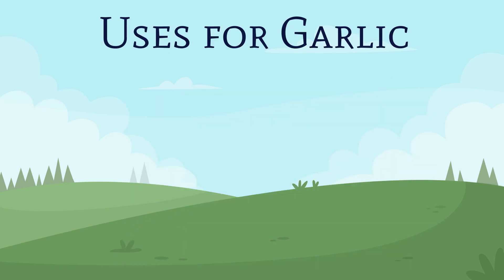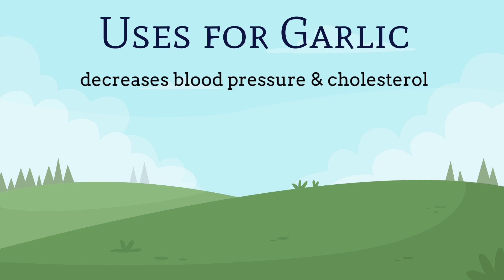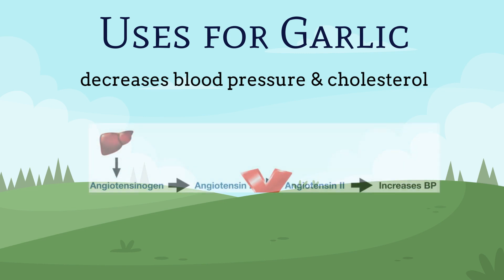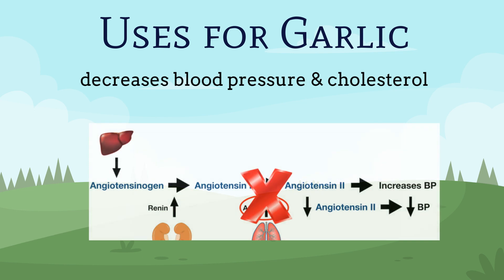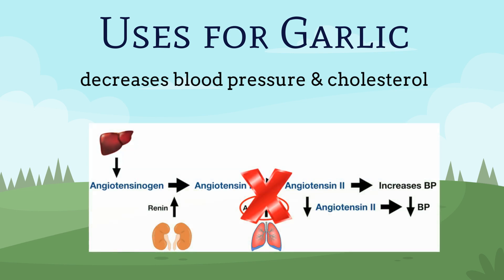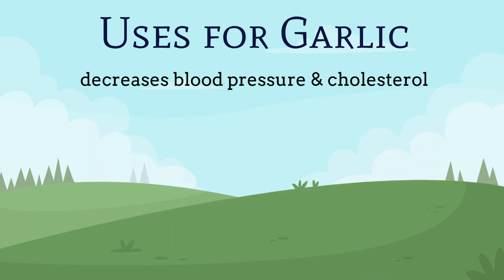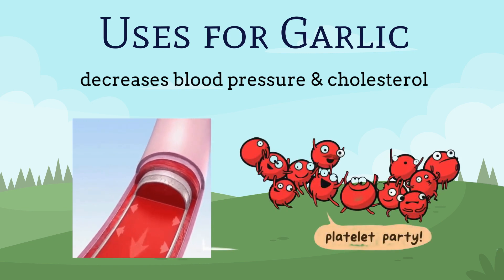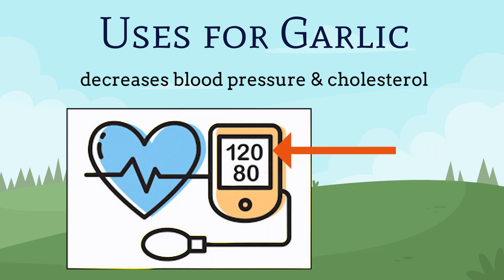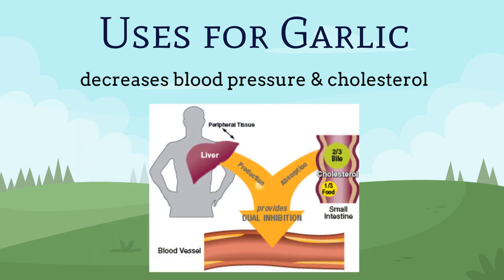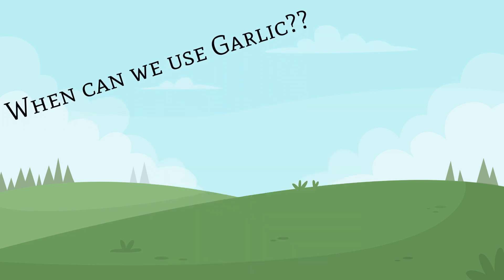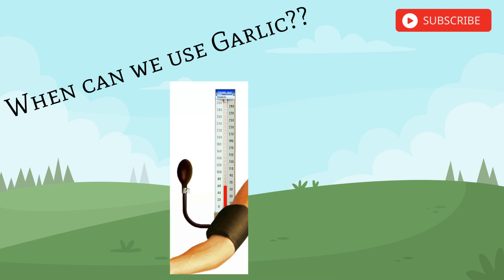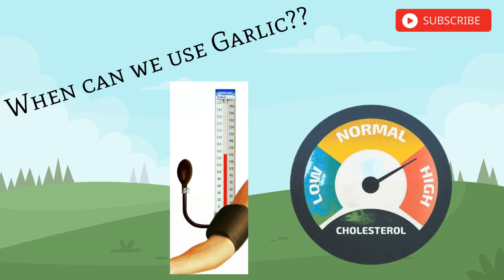A third recommended use for garlic is to decrease blood pressure and cholesterol. Garlic does this by decreasing angiotensin production, similar in nature to ACE inhibitors such as the commercially available lisinopril. The ACE inhibition increases vasodilation in the blood vessels and decreases platelet aggregation, decreasing both systolic and diastolic blood pressure readings. It will also decrease lipid production in the liver and thereby decrease cholesterol, which is helpful for those suffering from cardiovascular disease.